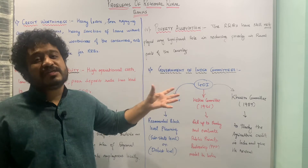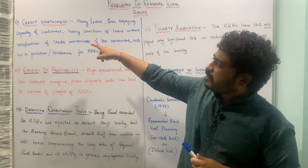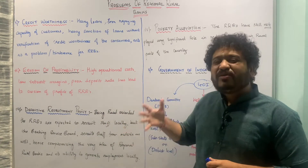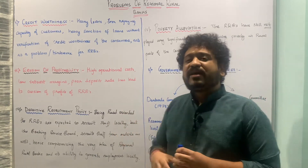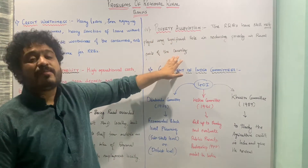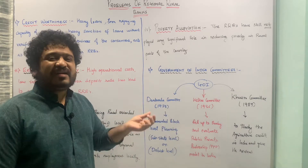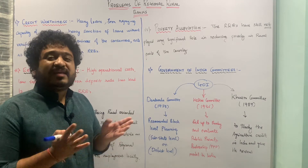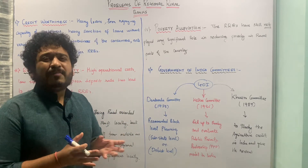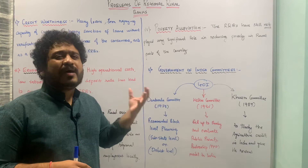These are different ways in which the Government of India also criticized the problems associated with regional rural banks. To summarize: the problems discussed today are creditworthiness, erosion of profitability, defective recruitment policy, failure in poverty alleviation, and criticism by three committees — Datwala, Kalkar, and Khusro — who felt the very idea of regional rural banks was being compromised, though to what extent is debatable.